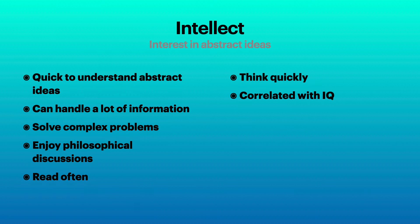When it comes to intellect, these people tend to be quick to understand abstract ideas, they can handle a lot of information, they like to solve complex problems, they enjoy philosophical discussions, they often read, they think quickly. Intellect tends to be correlated with IQ, although they aren't the same thing — and we're going to look into exactly what intelligence, IQ, and intellect mean in a little while.